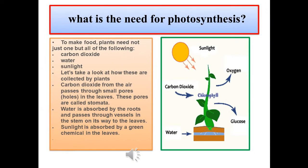To make food, plants need not just one but all of the following: carbon dioxide, water, and sunlight. Carbon dioxide from the air passes through small pores, or holes, in the leaves called stomata. Water is absorbed by the roots and passes through vessels in the stem on its way to the leaves. Sunlight is absorbed by a green chemical in the leaves.